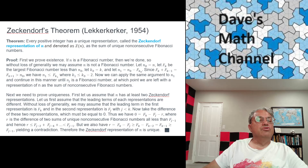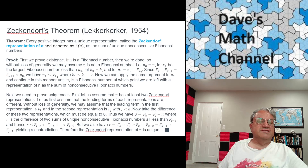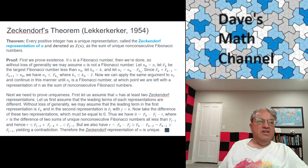Here's the proof — it's not that hard. You have to prove both uniqueness and existence. Existence is easier to prove, so let's start there — that's basically proof by induction. If n is a Fibonacci number, we're done, because n equals F_k for some index k. That is the Zeckendorf representation.